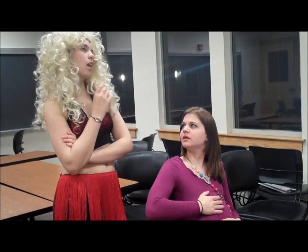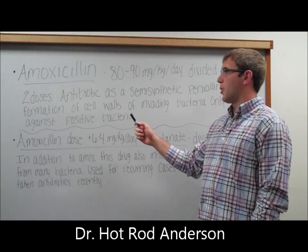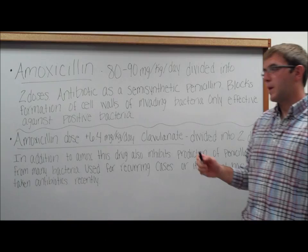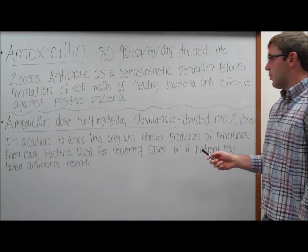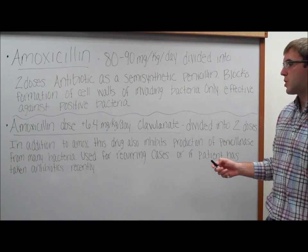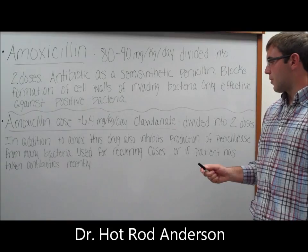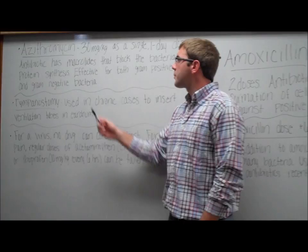What should you do if your child has otitis media? One of the most common treatments for a middle ear infection is amoxicillin — a 10-day therapy, two times a day. This is a semi-synthetic penicillin that blocks the formation of invading bacteria's cell wall, and it's only effective against gram-positive bacteria. If you add clavulanate to that, also taken two times a day, this drug will inhibit the production of penicillinase from bacteria, which is used for recurring cases of middle ear infection or if other antibiotics have been taken recently.